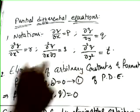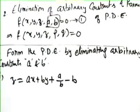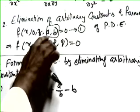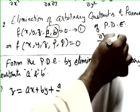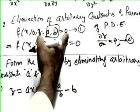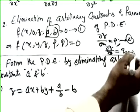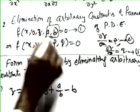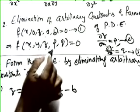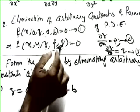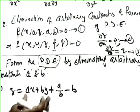We are going to solve questions based on elimination of arbitrary constants. Here a and b are called arbitrary constants, so we have to eliminate them. We partially differentiate with respect to x — call this equation 2 — and partially differentiate with respect to y — call this Q, equation 3. Solving equations 1, 2, and 3 we eliminate a and b to get the partial differential equation in terms of x, y, z, P, and Q.